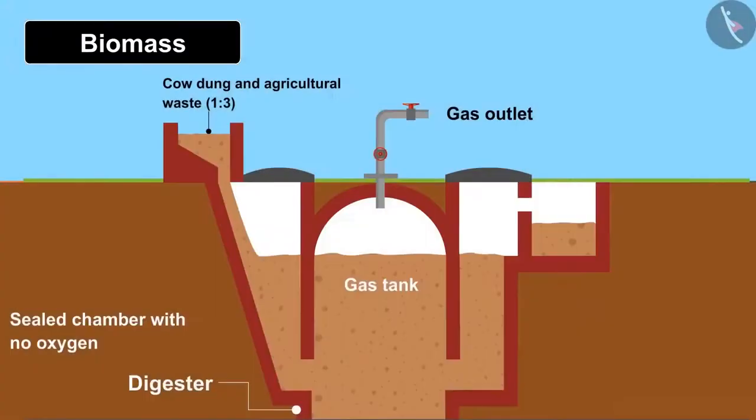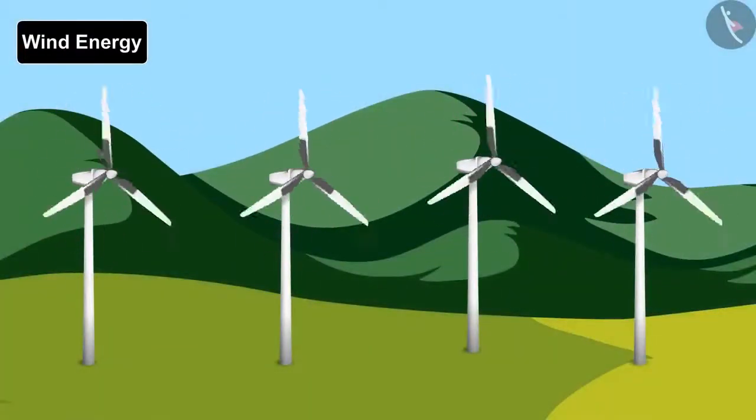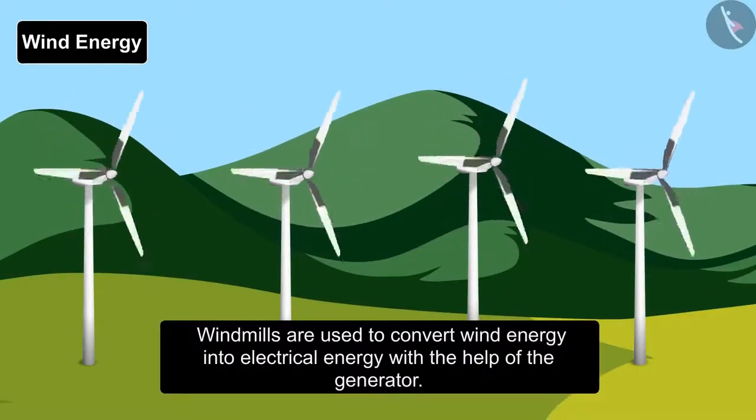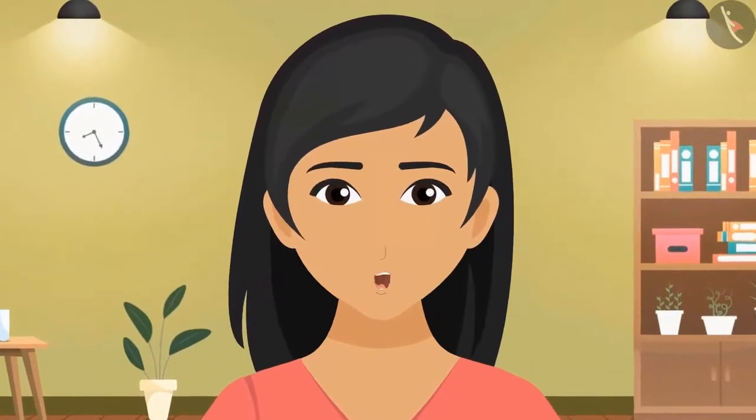The last source of energy is known as wind energy, which can be found where wind flows swiftly. Large windmills are used to convert wind energy into electrical energy with the help of a generator. We enlightened many conventional sources of energy.